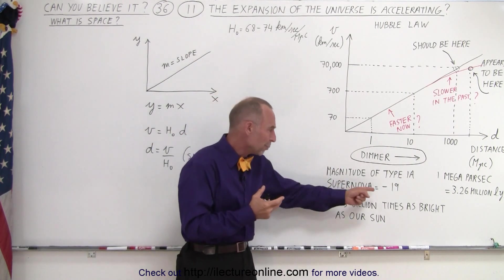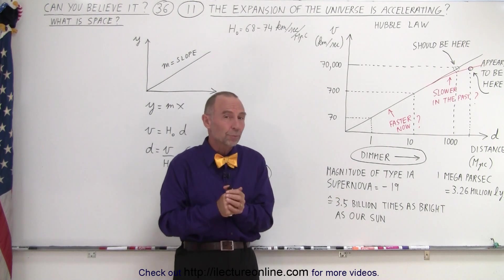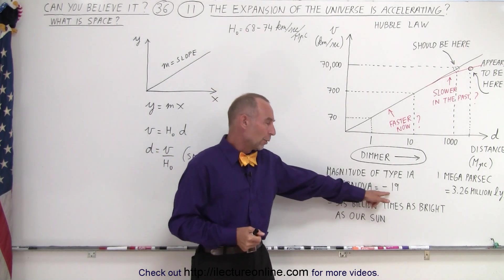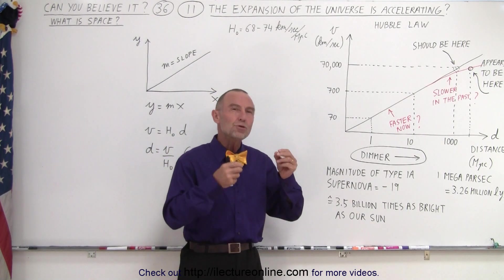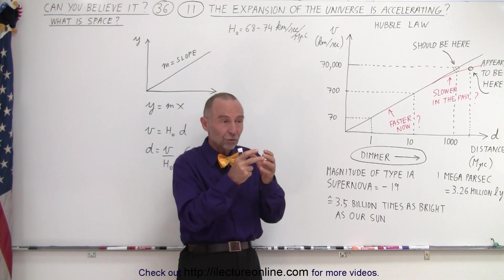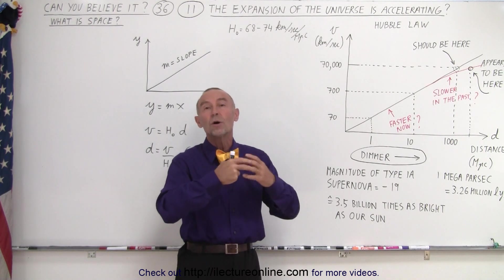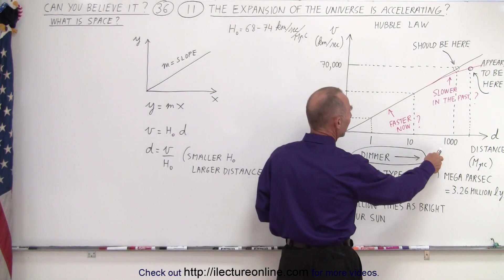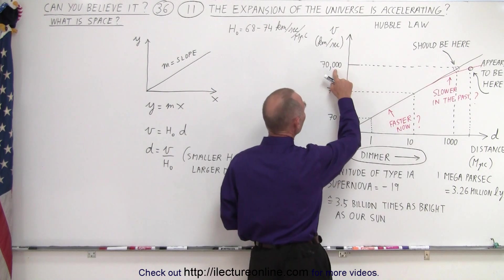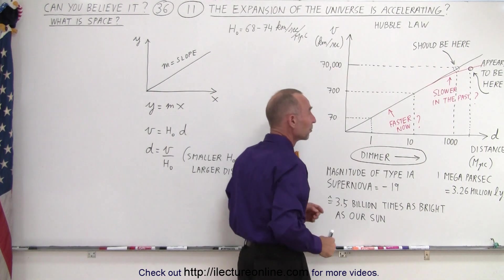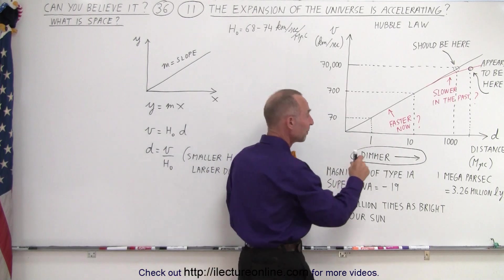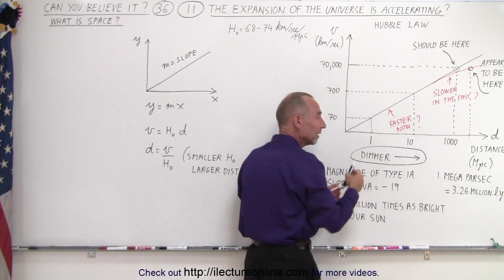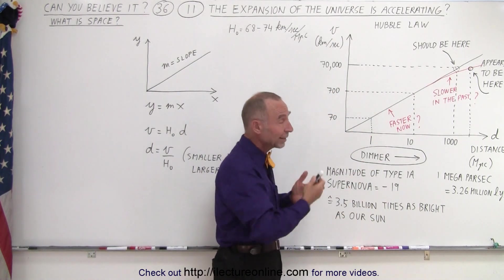These supernovas can be seen over very large distances. Since every Type 1a supernova has the same brightness because of how they're created, we know what to expect. If we see them at a certain brightness, we know how far they are. For example, if a Type 1a supernova is moving away at 70,000 kilometers per second, we'd expect it to be at a thousand megaparsecs. For closer distances, this works out quite nicely.